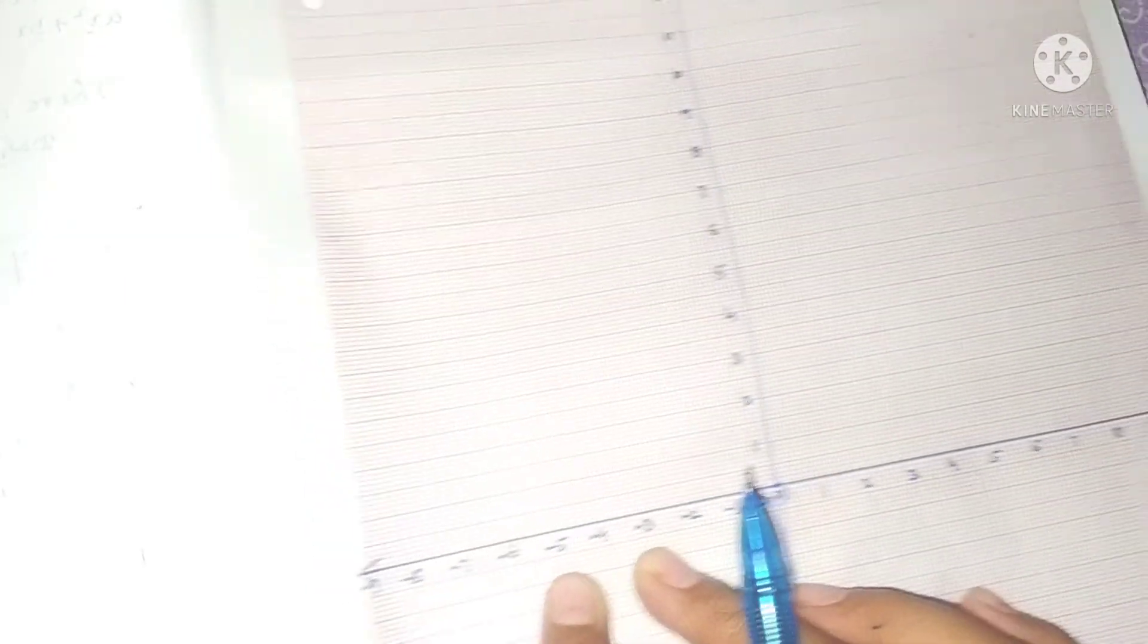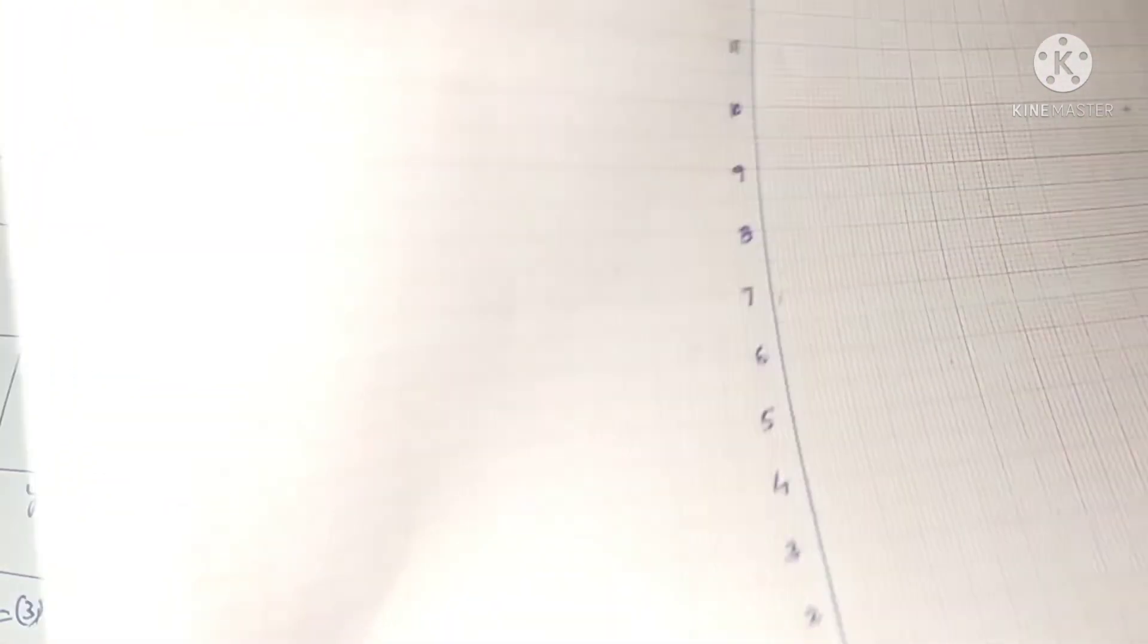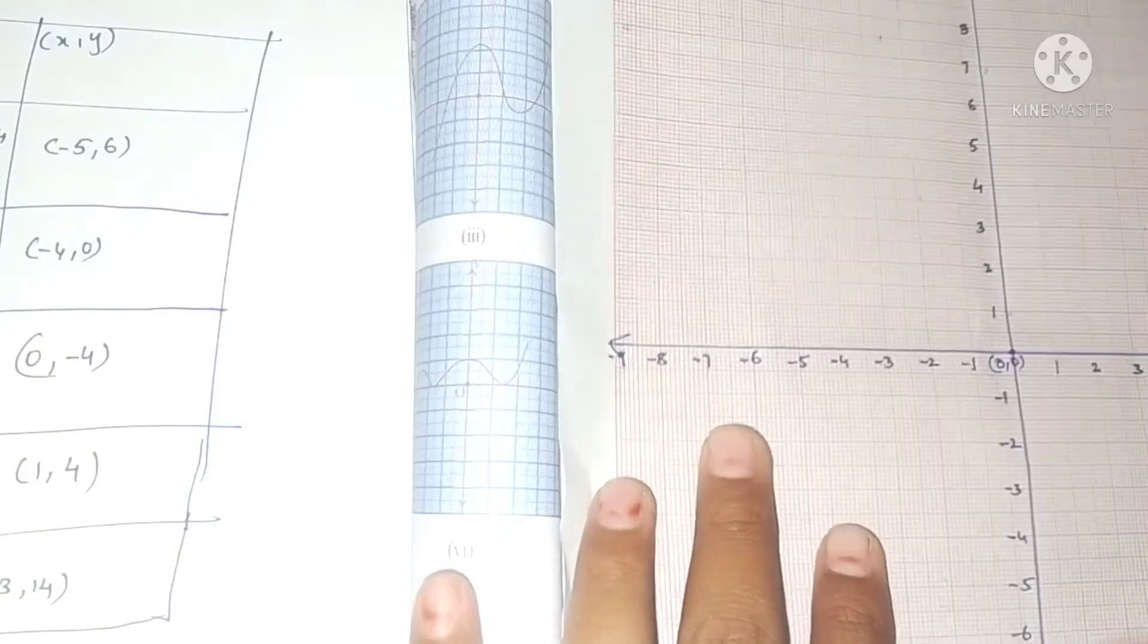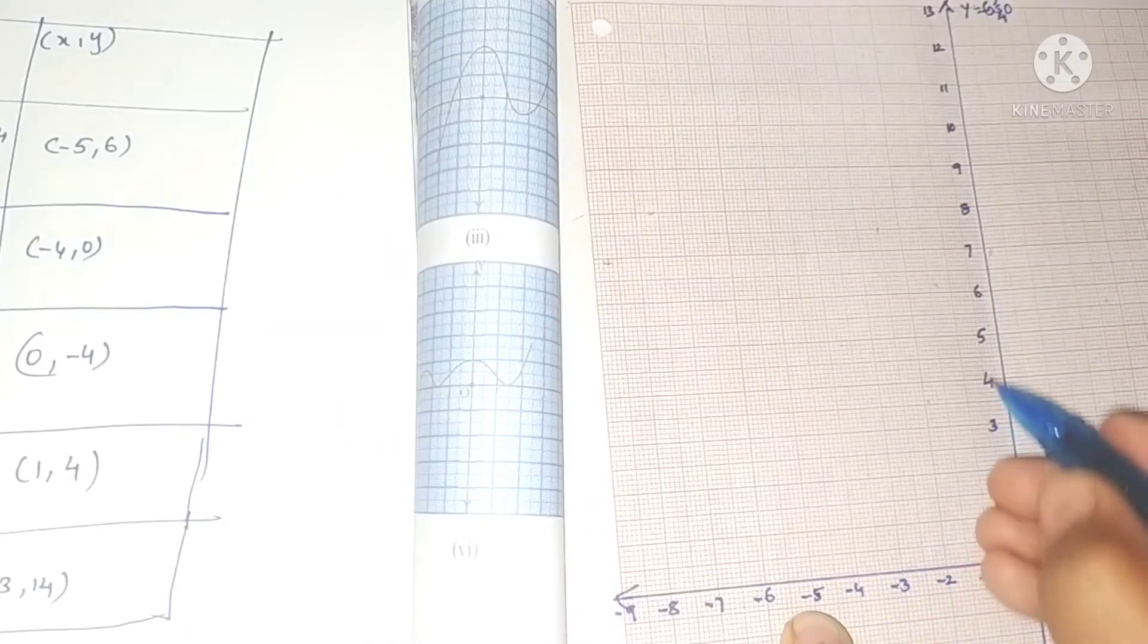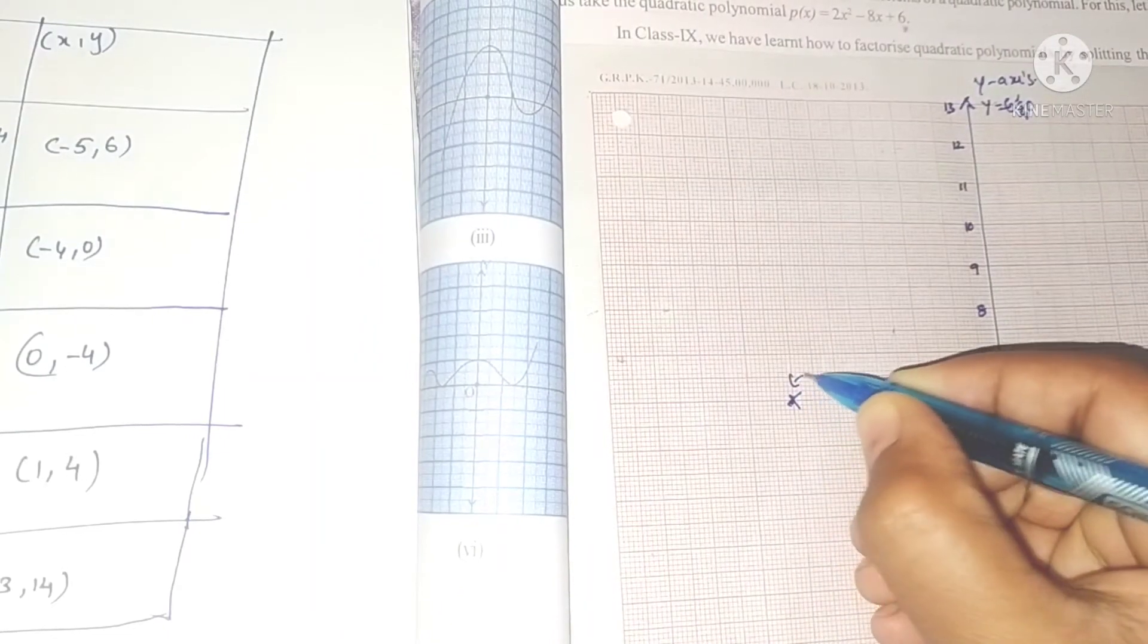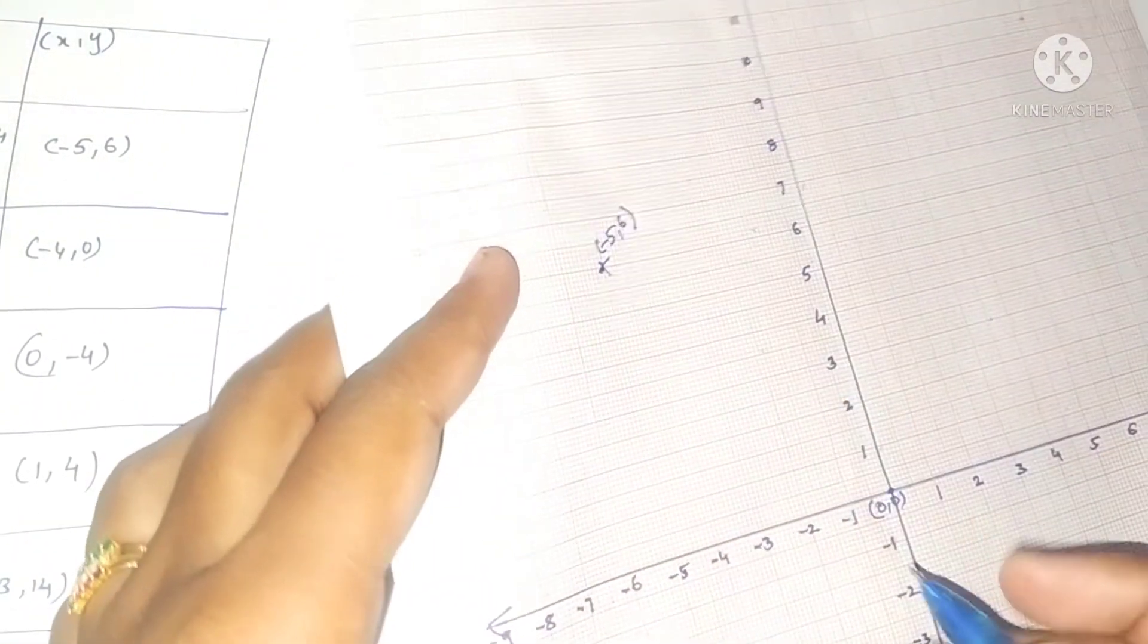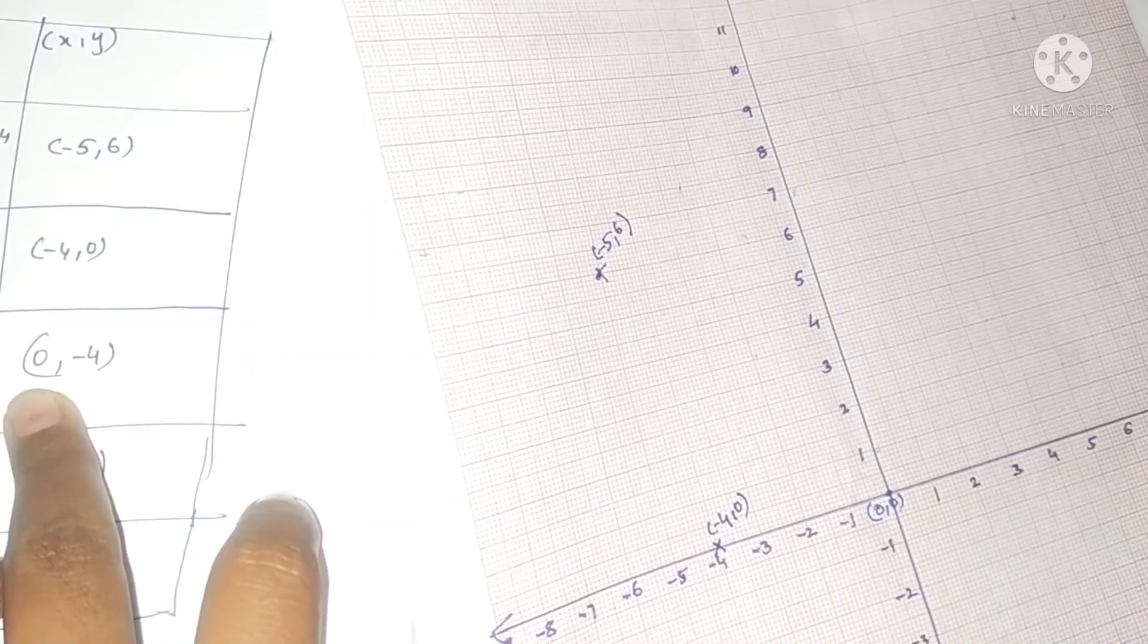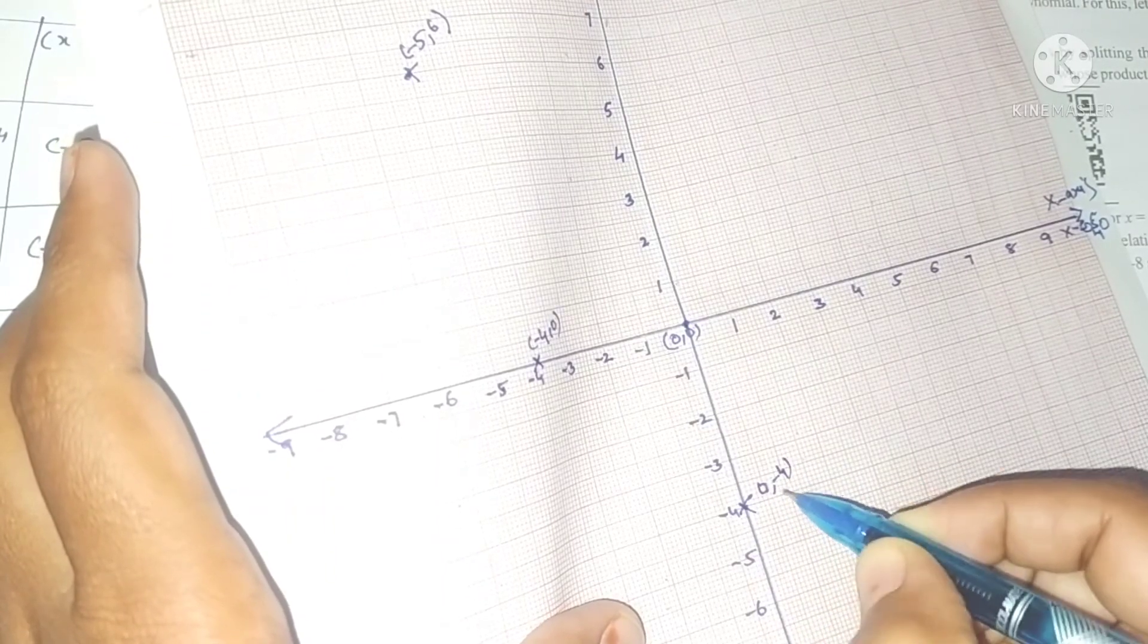First point is minus 5 comma 6. On the x-axis, minus 5 is here, and y value is 6. Next point is minus 4 comma 0, so minus 4 on the x-axis where y is 0.